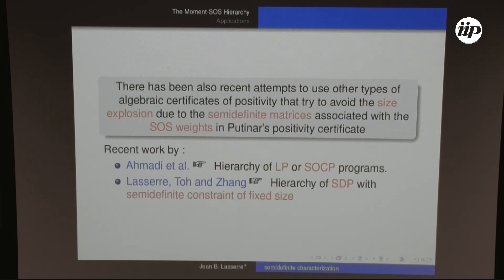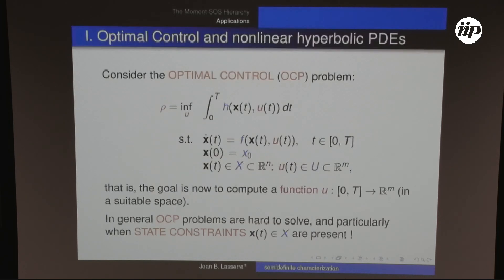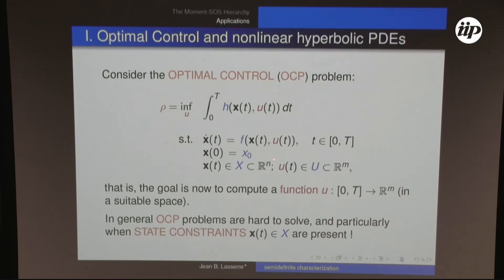There has also been work on defining more efficient positivity certificates. Now let's look at some applications. One is optimal control of nonlinear ODEs and nonlinear hyperbolic PDEs. In a typical optimal control problem, the state of a system evolves according to an ODE, you have some control available, you start from an initial state, and both the state and control are constrained to belong to certain sets. State constraints make this a difficult problem.